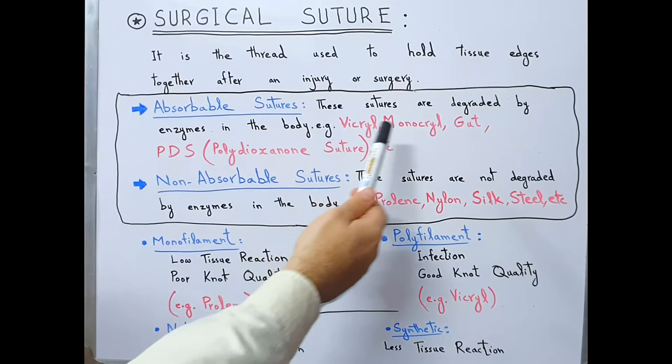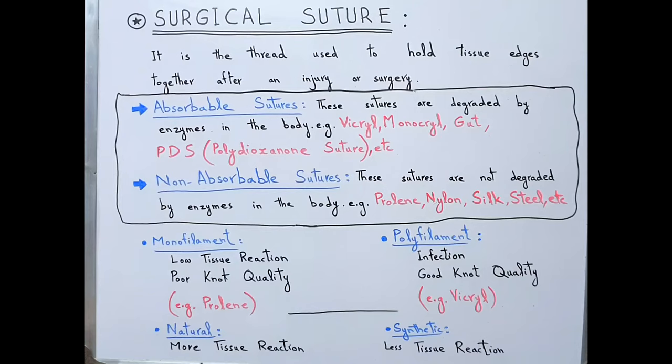Absorbable sutures are the sutures which are degraded by enzymes in the body. Examples include Vicryl, Monocryl, gut, PDS, and polydioxanone suture.